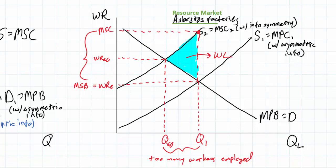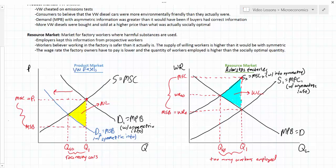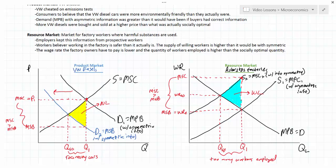There's a loss of total welfare arising from the imperfect information that employers are not sharing with their employees. Looking at both graphs, in both cases the marginal social cost is greater than the marginal social benefit when asymmetric information exists. Whenever marginal social cost is greater than marginal social benefit, resources are over-allocated towards the production of that good. In the case of Volkswagen diesels, too many cars were produced and bought because consumers did not know the true environmental impact. In the case of asbestos factories, more workers are employed at a lower wage rate than would be the case if workers had perfect information.